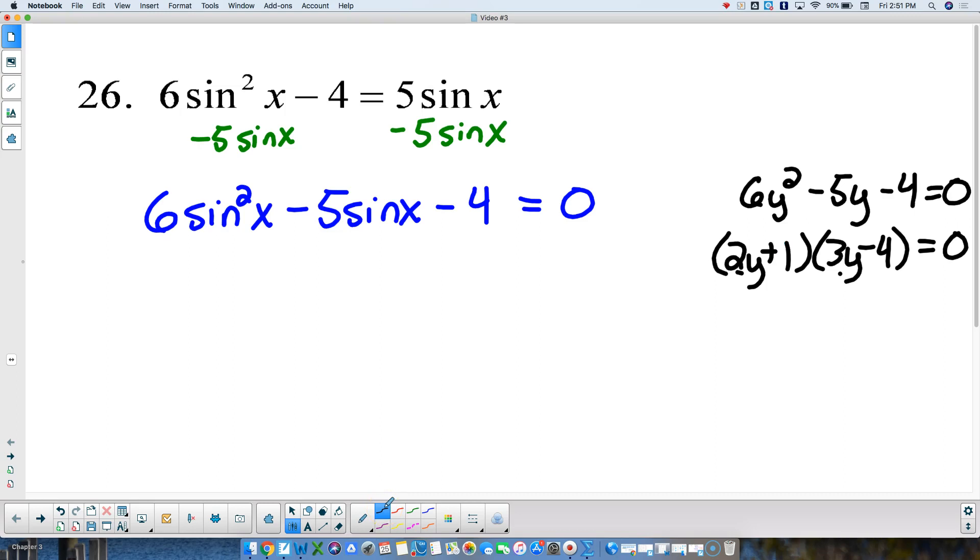That same process is going to work over here. We're still going to make two sets of parentheses. Going to probably make them a little bit bigger now because I've got to write a trig function in them. But then this would factor out to be 2 sine of x plus 1 and 3 sine of x minus 4.